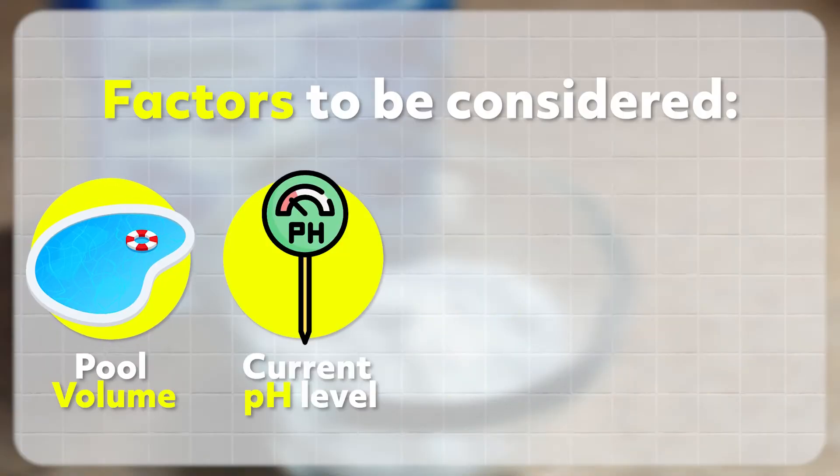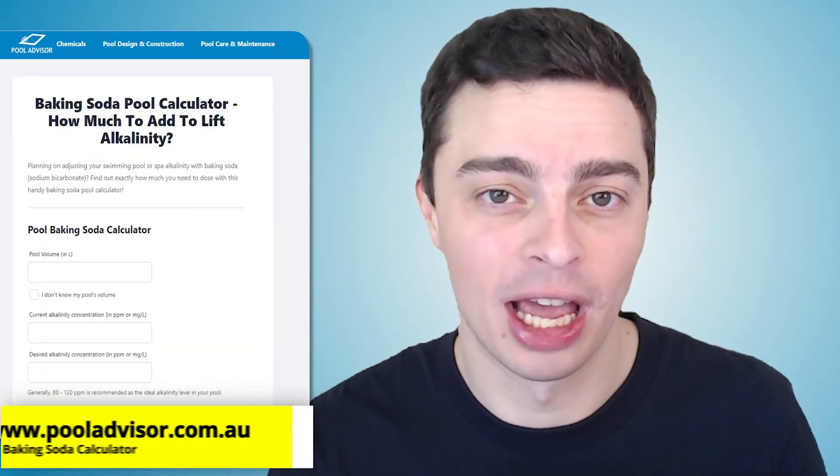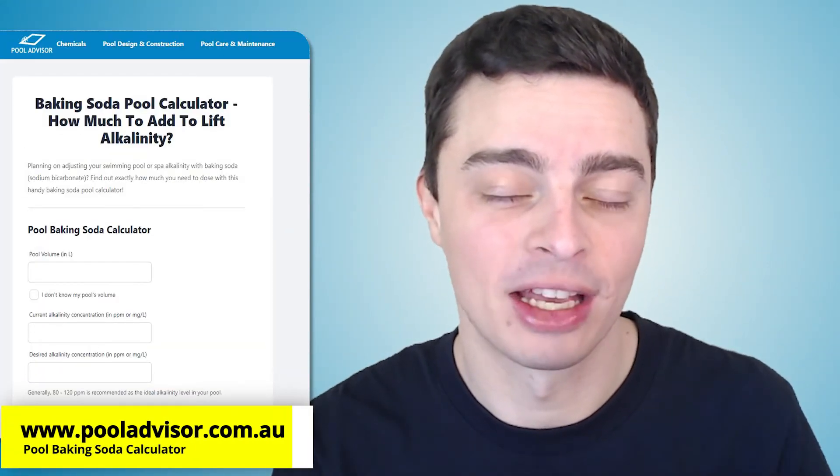Well, that depends on quite a few different factors, including your pool volume, your current pH, your current alkalinity, and the target alkalinity — the alkalinity level that you want your pool water to be at. Considering all that, it's quite difficult to tell you exactly how much you should add, as it depends on your circumstances. For this reason, I've made a calculator to help you work out exactly how much baking soda you should add.